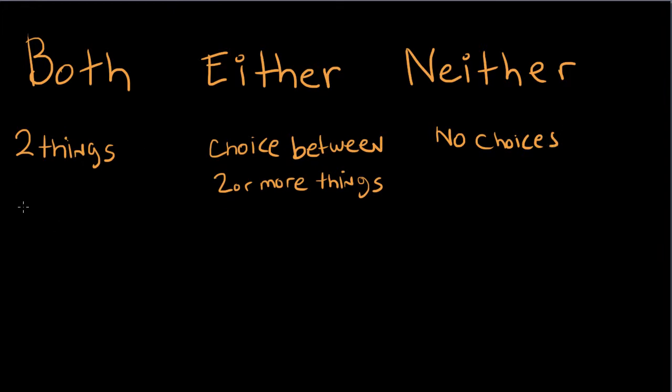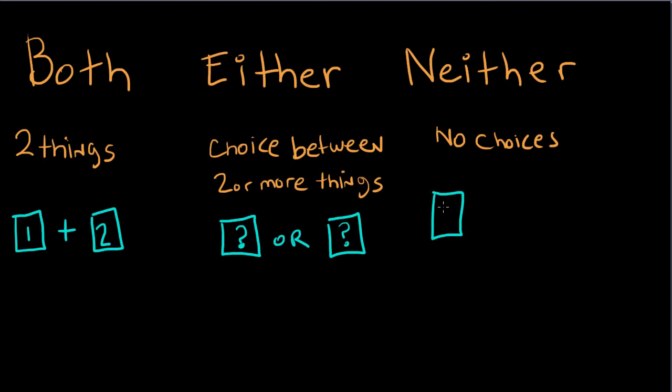Let's look at how we can describe both. Both would be two together. Either would be this one or that one. And neither would be not this one and not that one.